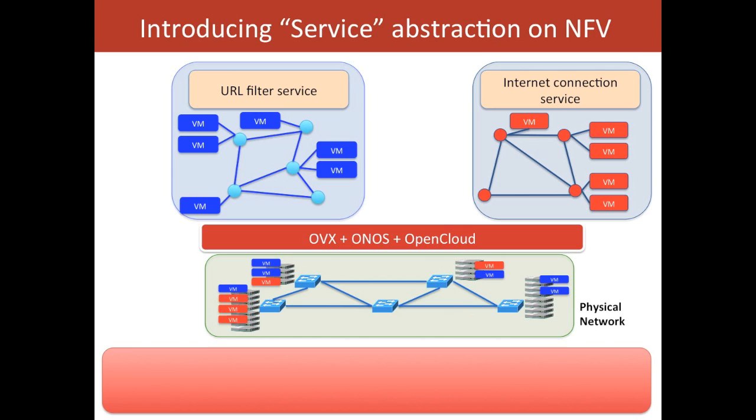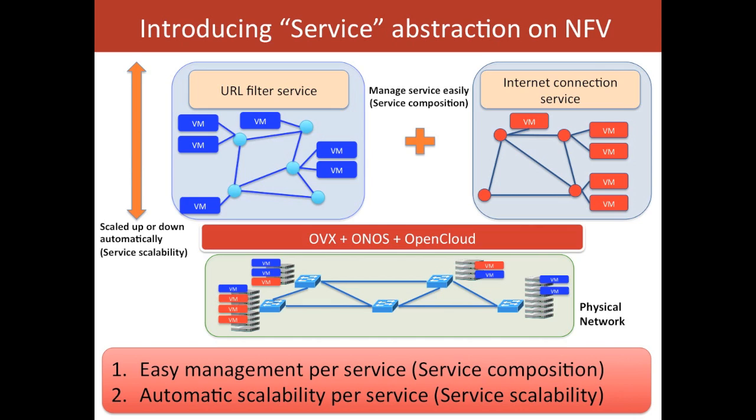What we show today is an NFV use case using service abstraction. Our service abstraction has two main features: service composition and service scalability. Service composition achieves easy management in service units, so the operator doesn't need to think about complex details. Secondly, service scalability achieves automatic scalability of network functions. We will demonstrate these functions in this demo.